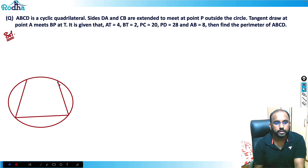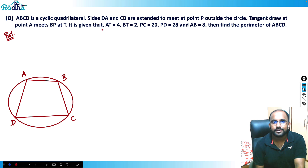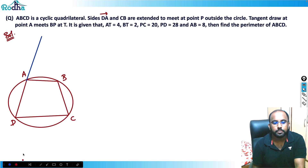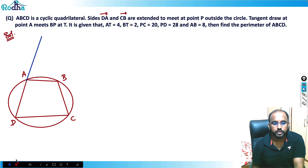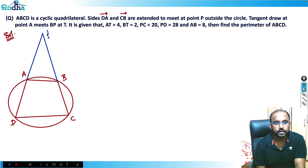Let these lines be DA and CB. DA means D to A, so D to A is produced here. CB means C to B — had it been BC it would mean B to C, but here it is CB, so C to B. I'll extend here and they meet at point P.